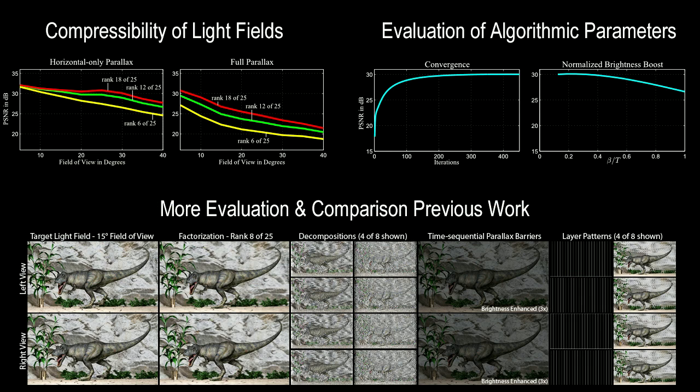In the paper, we evaluate the compressibility of light fields and algorithmic parameters. We also compare the factorization approach to conventional time-sequential parallax barriers, which are significantly darker and require higher-speed SLMs.